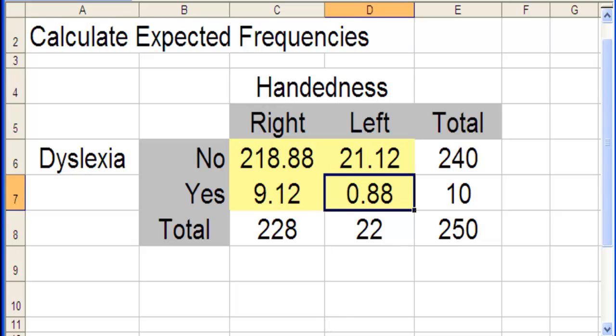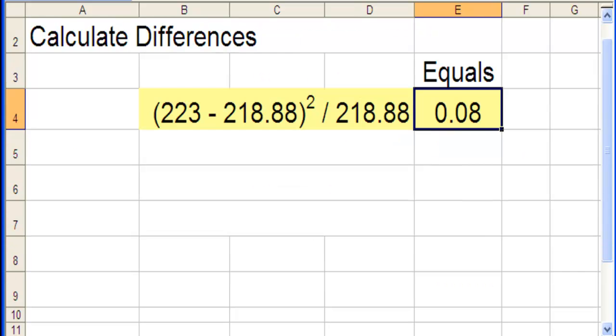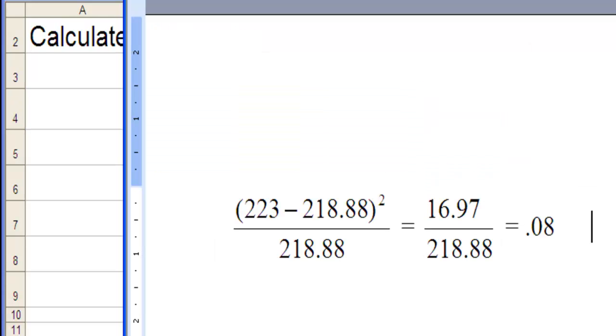Okay, so now we need to calculate the differences between the observed and expected frequencies. In this case, you might remember that right-handers who did not have dyslexia, there were 223 of them. But the expected value was 218.88. Now I'm going to square that difference and then divide by the expected value. You might see this more in a formula format like this, but I couldn't do that in an easy way in the spreadsheet I created on the interactive website. So I just created it in a more simple way. But that's the same thing, 223 minus 218 squared divided by 218.